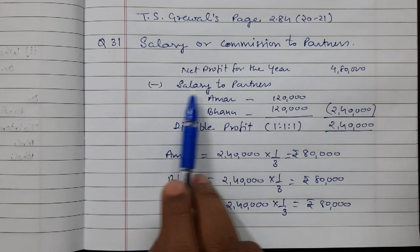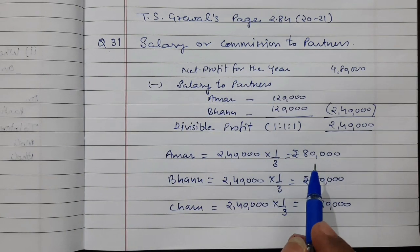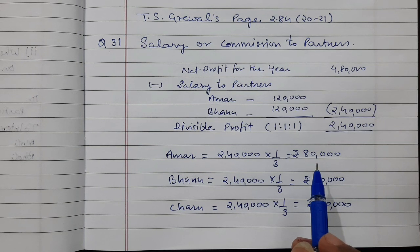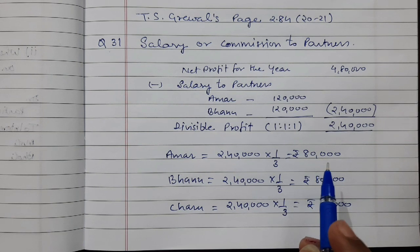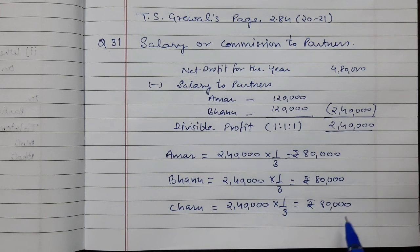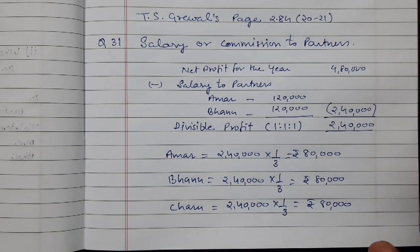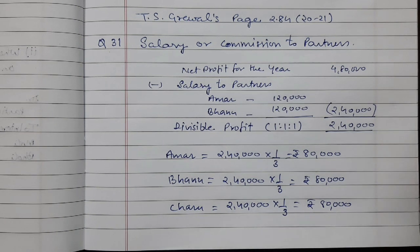This question can also be shown in the profit and loss appropriation account. But the question says to determine the share of profits, and nothing is written about whether we have to prepare a profit and loss appropriation account or not. So this way we can also determine the share of profit.